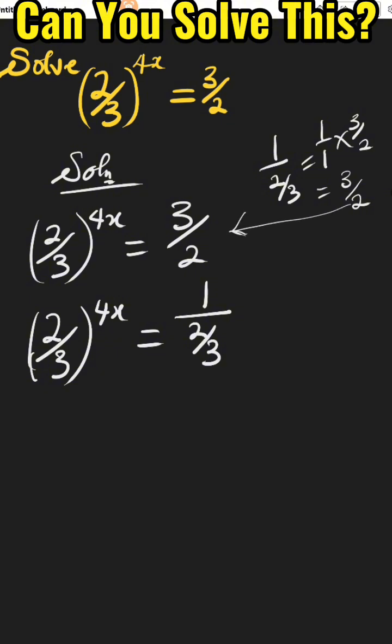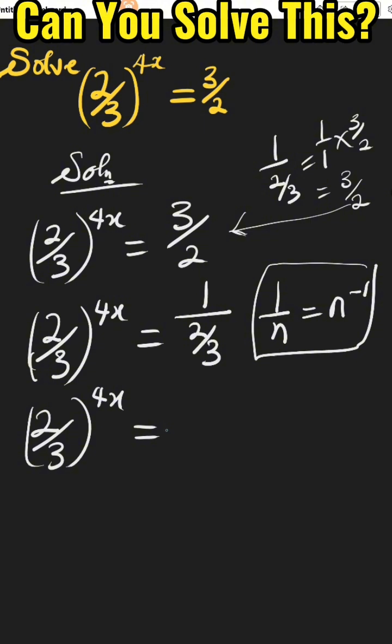Then in law of indices, whenever we have 1 over n, it's the same thing as n raised to the power of minus 1. If we apply it to the right-hand side, we're going to have (2/3) raised to the power of 4x equals (2/3) raised to the power of minus 1.